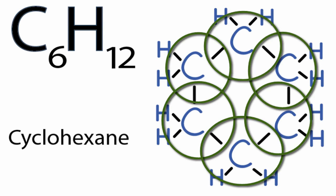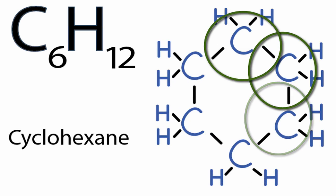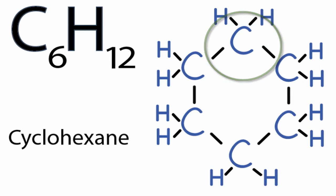They have octets, so their outer shells are full. Each hydrogen has a bond, which is two valence electrons, and that's all they need for a full outer shell. So this is the Lewis structure for cyclohexane, C6H12.